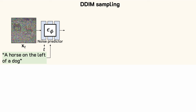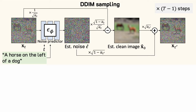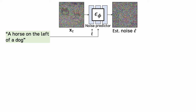How does it work? In each step, we use a noise predictor to estimate the noise, conditioned on the time step and the input text prompt. This noise estimation allows us to predict a clean image and a less noisy image for the next step. By repeating the process for multiple iterations, we can generate a clean image. But wait — why is the dog missing from the image? To fix this, we need to understand how we generate images conditioned on the text prompt.